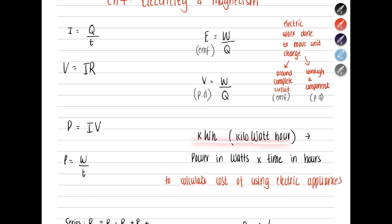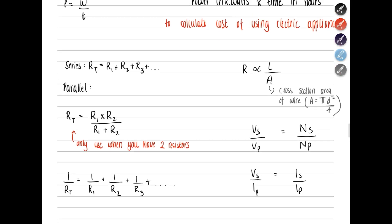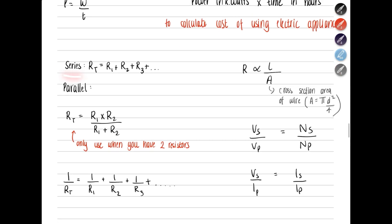Then, you have something called kilowatt hour. As the name suggests, it is kilowatts, the power in kilowatts, multiplied by time in hours. This is basically used to calculate the cost of using your electrical appliances. Then, you have resistances, calculating resistance. If it is series, to find the total resistance, you just have to add. But for parallel, it is slightly different.